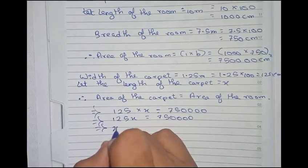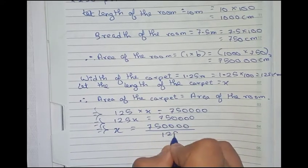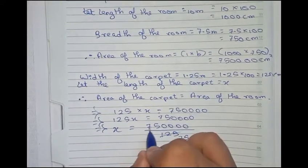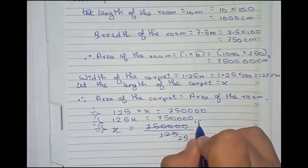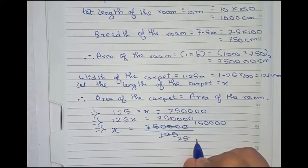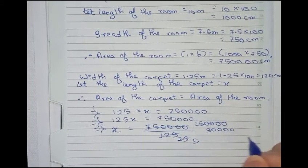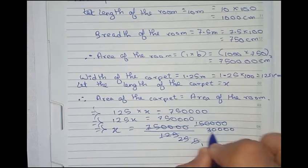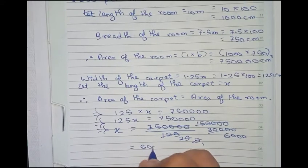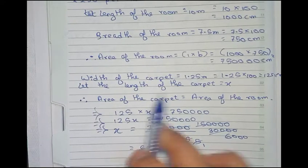Now x equals to 750000 by 125. We will cut by 5, it becomes 25. We will cut by 5 again, and again we will cut by 5 so it becomes 30,000. Now again we will cut by 5 so it becomes 6,000. It is equal to 6,000 centimeter.